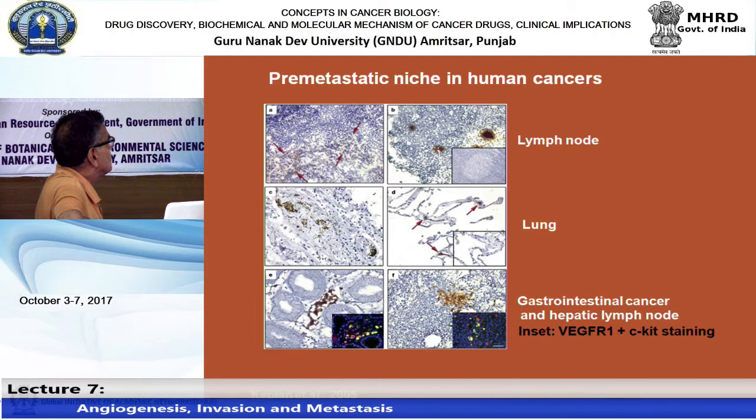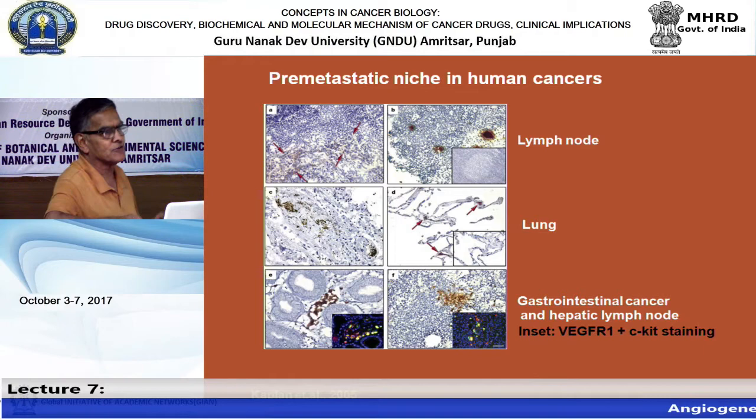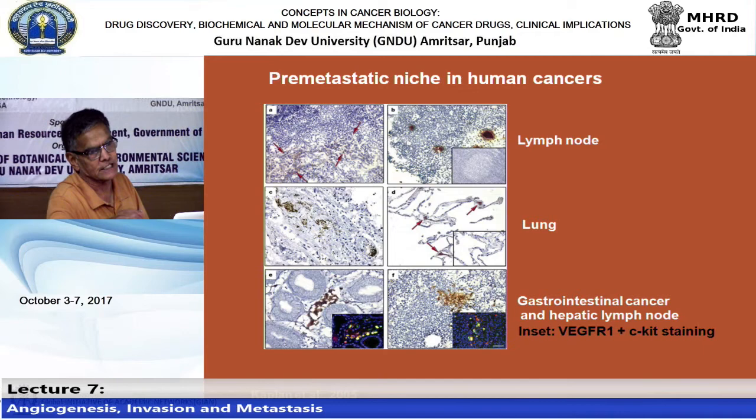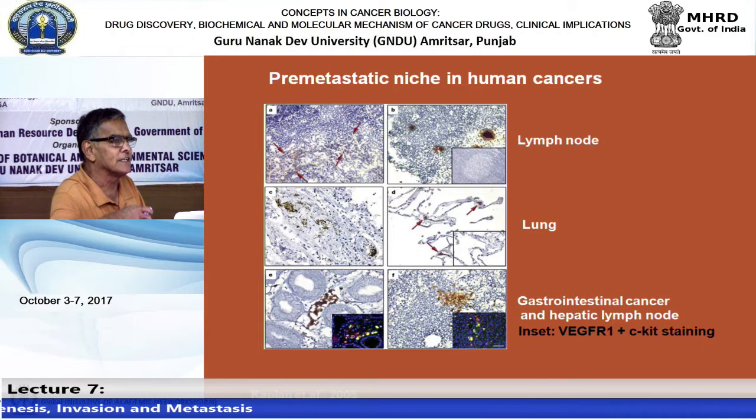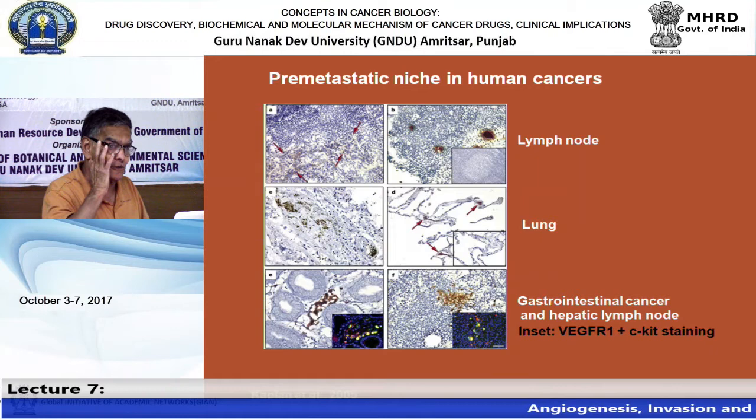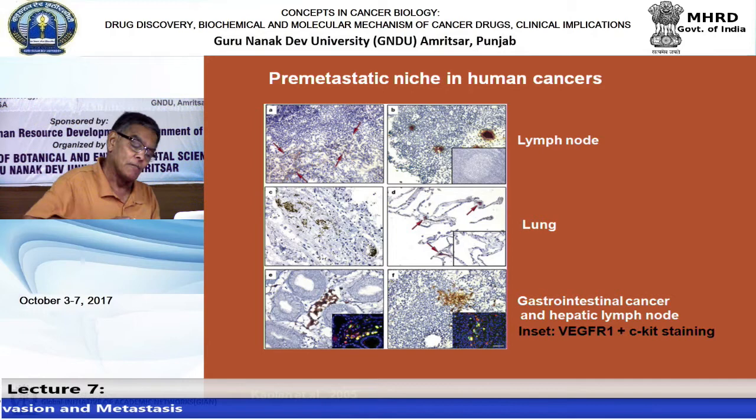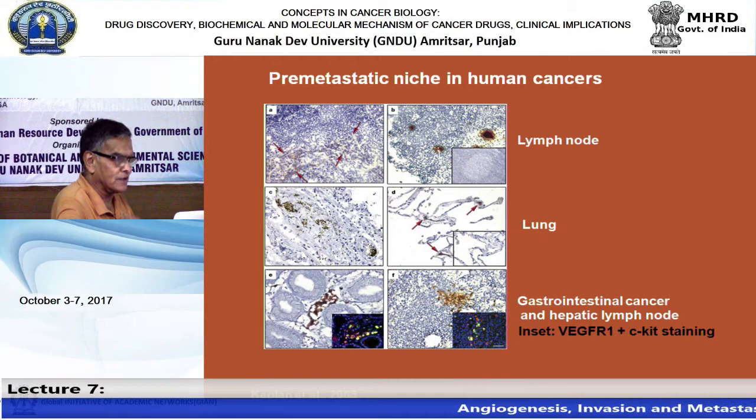Studies on colon cancer show staining of VEGF and c-kit - a tissue oncogene derived from a viral oncogene - in distant organs, forming the 'bed' for incoming tumor cells. The distant organ shows positive reactivity to antibodies for VEGF and c-kit, indicating preparation for colon cancer metastasis. There are approximately 50 Nature and Science papers explaining this concept.